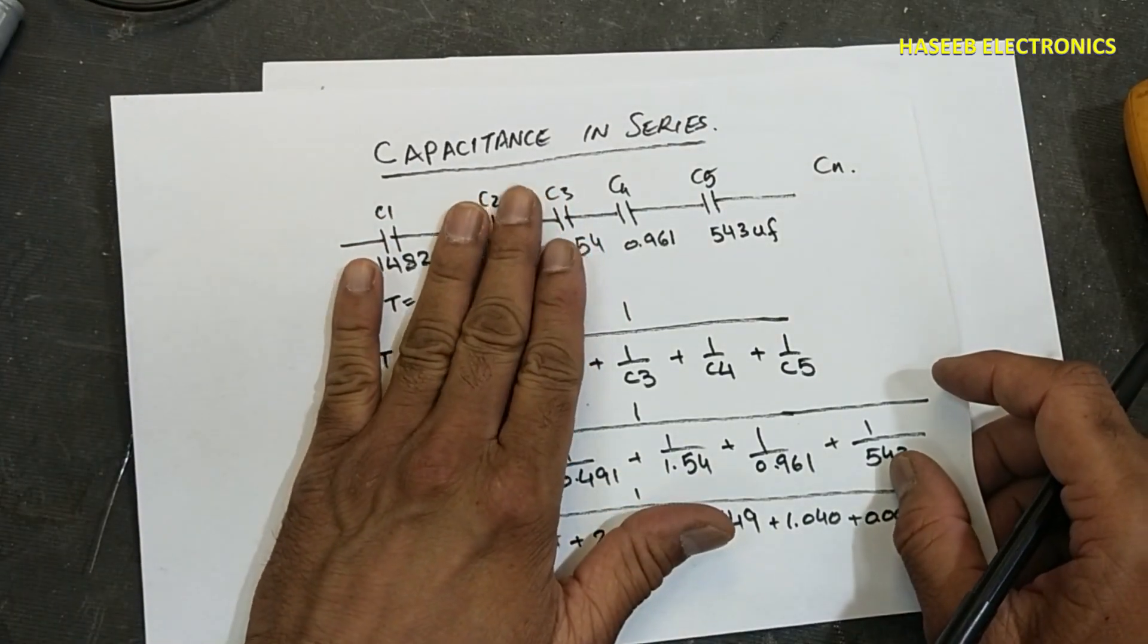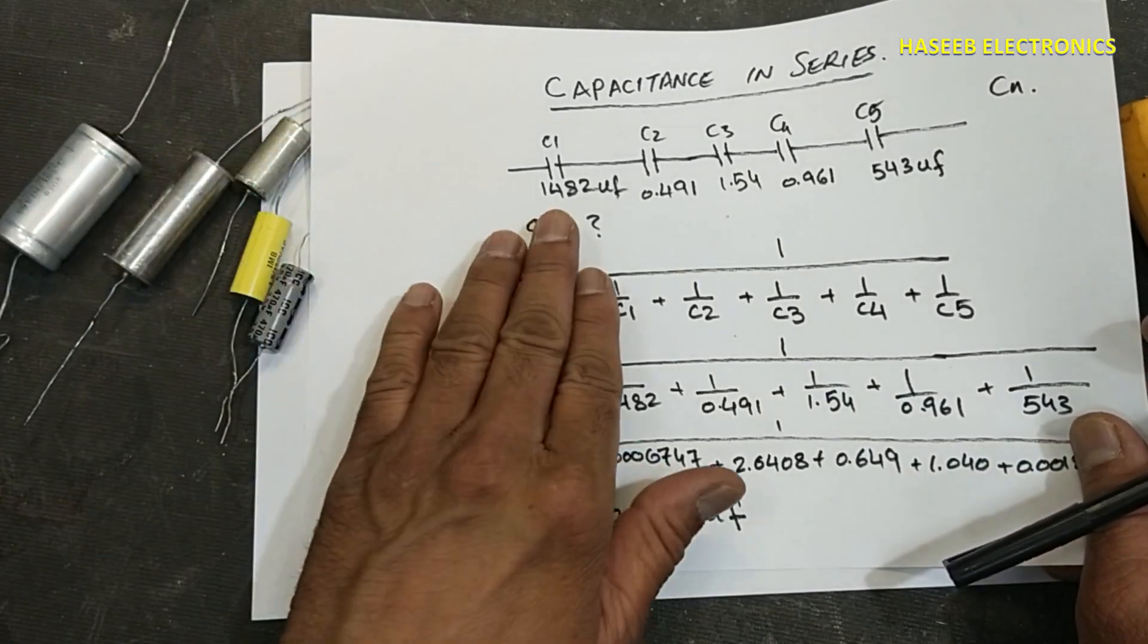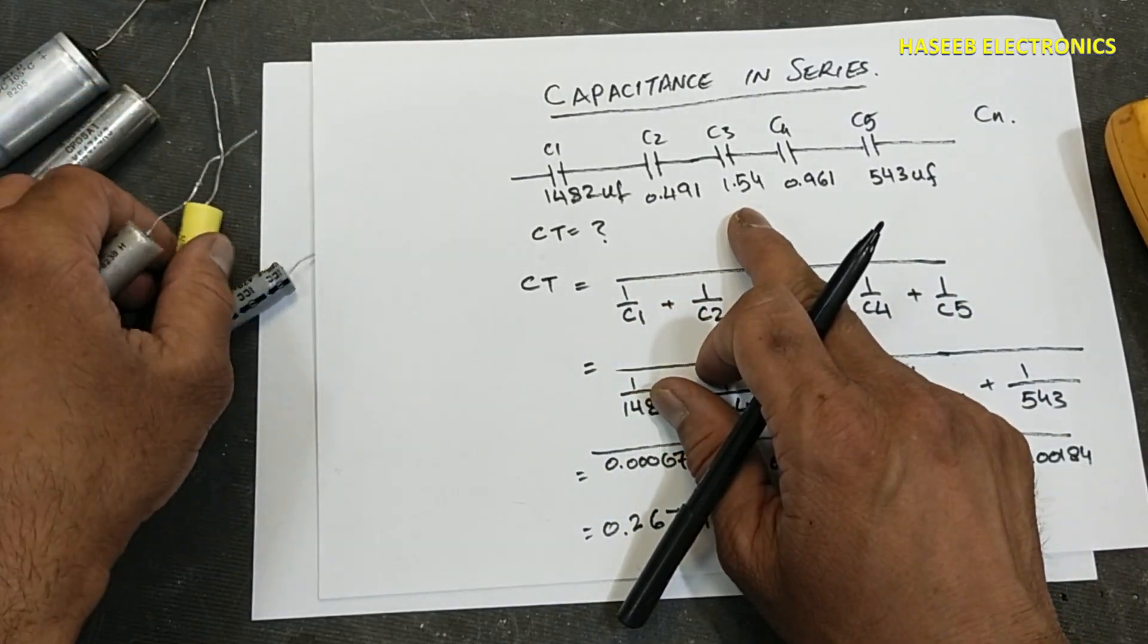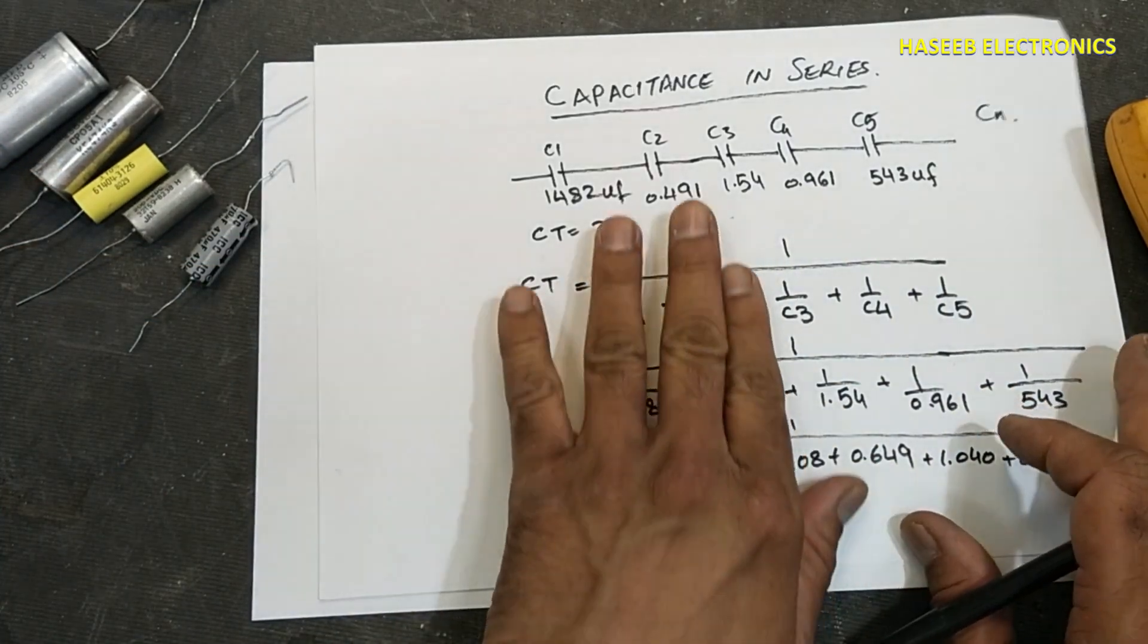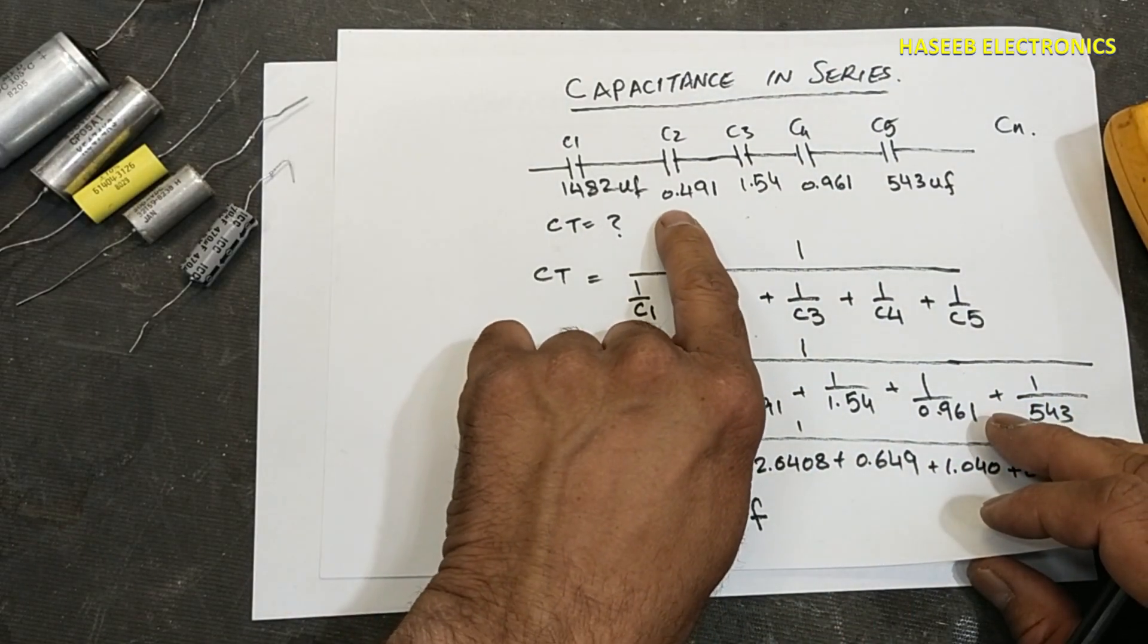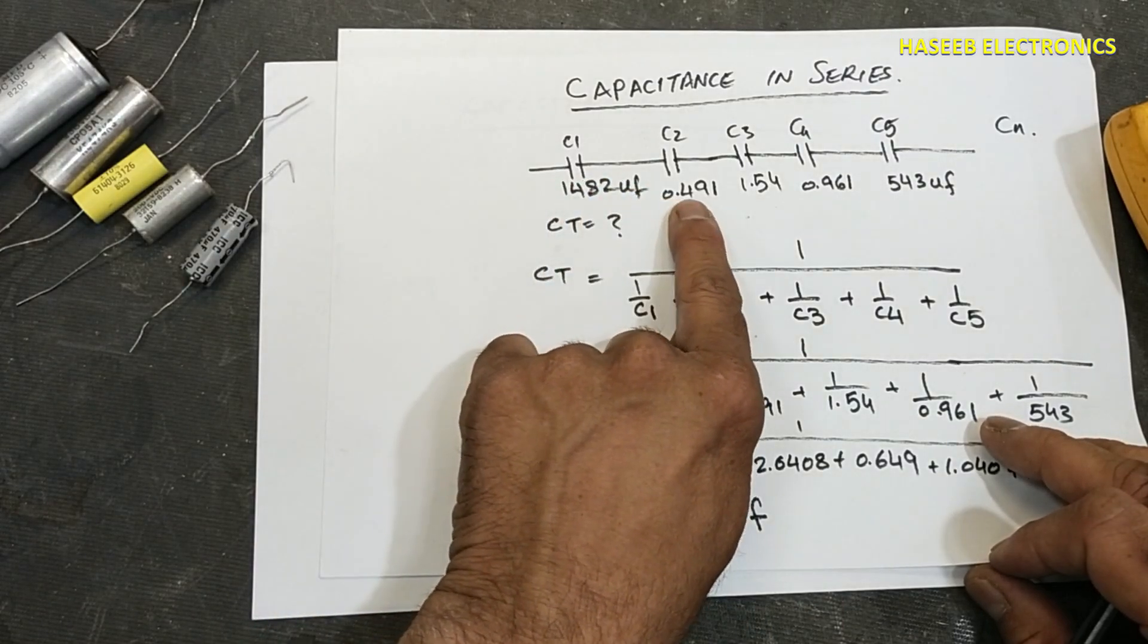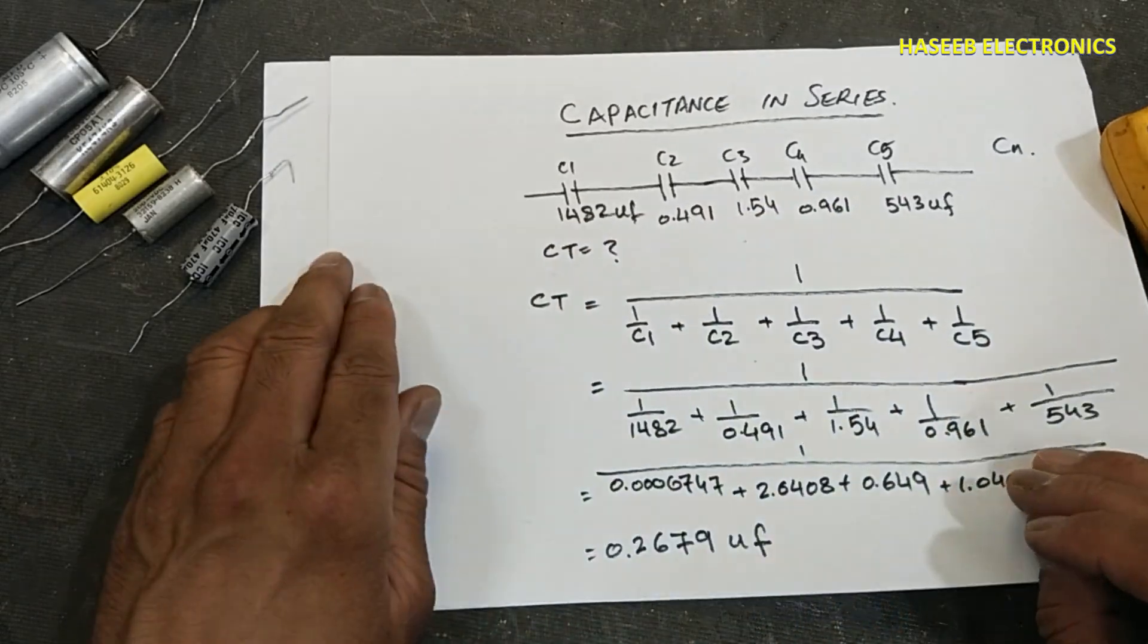In my last video we discussed capacitance in series when we have these capacitors. The first one is 1000 microfarad, 0.47, 1.5, 4.1 micro, 470 micro. The total capacitance in series will become lower than the smallest capacitor in the circuit, so it is 0.2679 microfarad. Here is the lowest capacitor, 0.49. This is series connection and now we will connect in parallel.